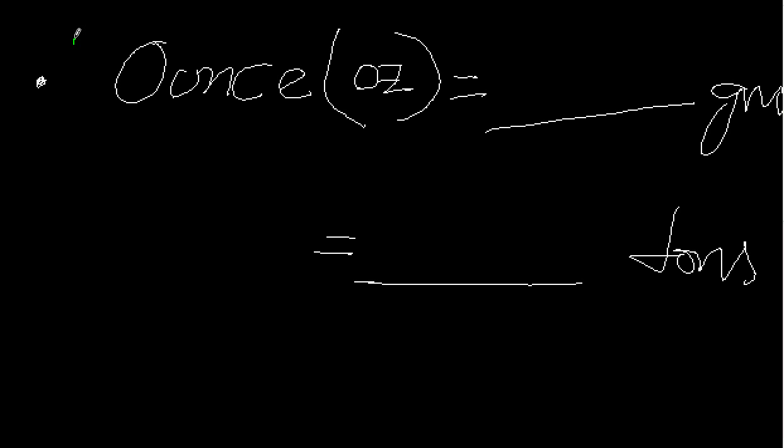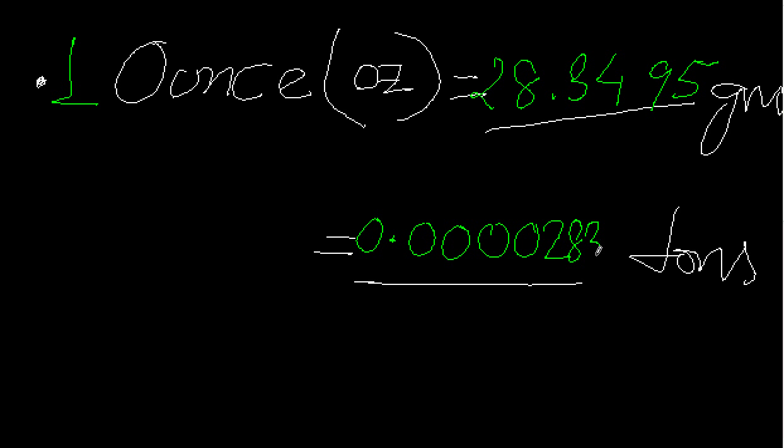So what is the relation? The relation is 1 ounce equals 28.3495 grams, and 1 ounce equals 0.00002835 tons.